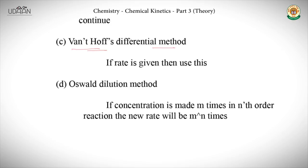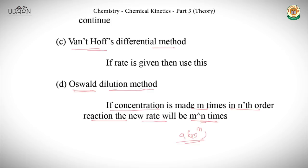The fourth method is Ostwald's dilution method. In Ostwald's dilution method, if the concentration is made m times in an nth order reaction, the rate of the new reaction will become m raised to n times. So the new rate equals the previous rate multiplied by m raised to the power n.